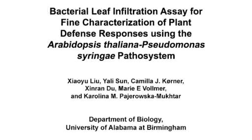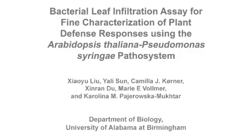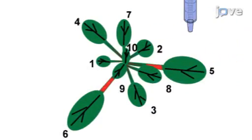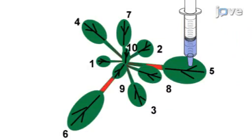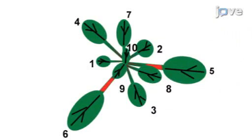The overall goal of this procedure is to quantitatively characterize Arabidopsis thaliana immune response through an optimized syringe infiltration assay. This is accomplished by first using syringe infiltration to manually deliver bacteria into the leaf through the natural openings called stomata.